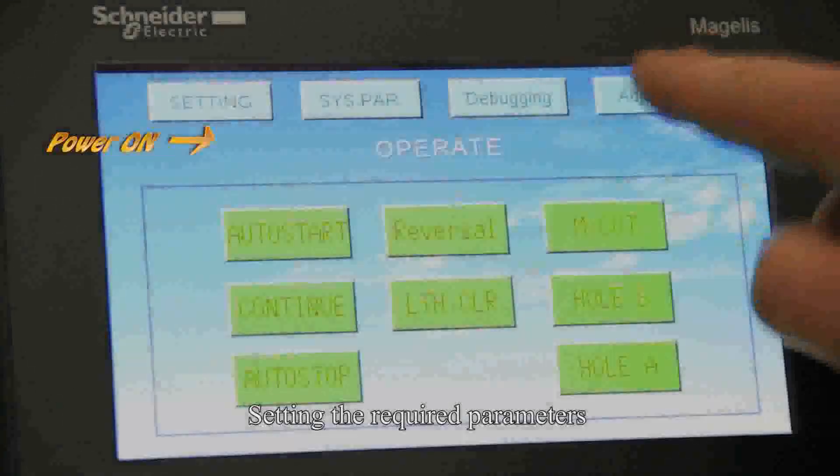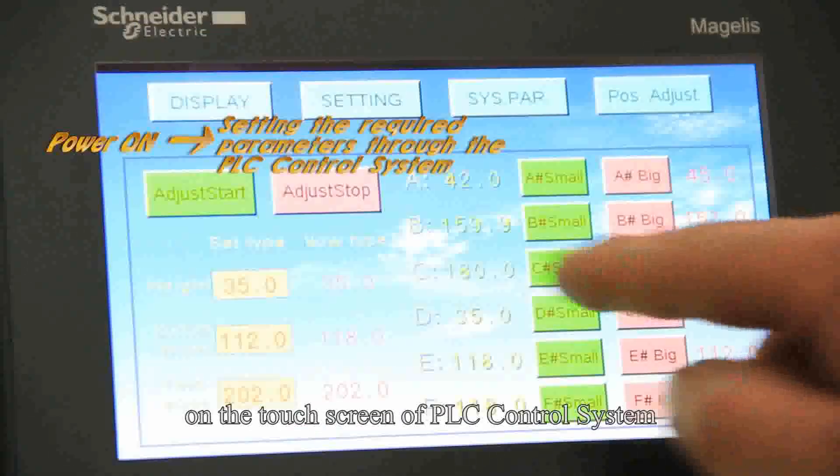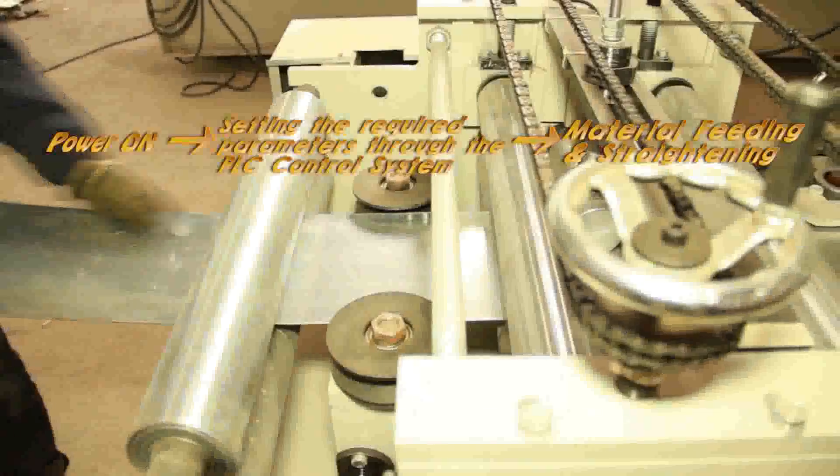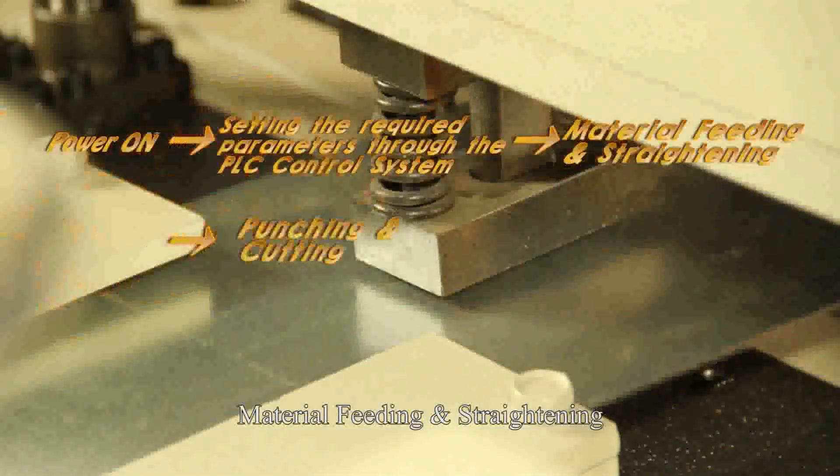Power On. Setting the required parameters through the PLC control system. Material Feeding and Straightening. Punching and Cutting. Roll Forming. Cutting by the Setting Length. Shaping and Finishing Products.